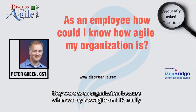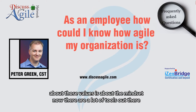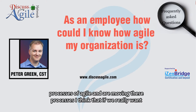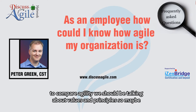Because when we say how agile am I, it's really about those values. It's about the mindset. There are tools out there like the Comparative Agility Survey, for example. They go much more into the processes of agile and whether we are doing those processes. I think that if we really want to compare agility, we should be talking about values and principles.